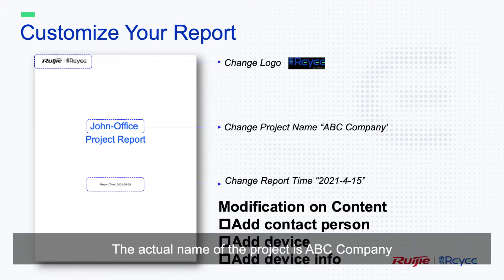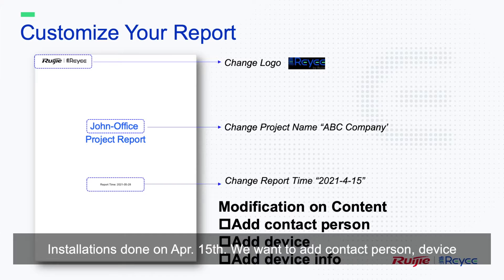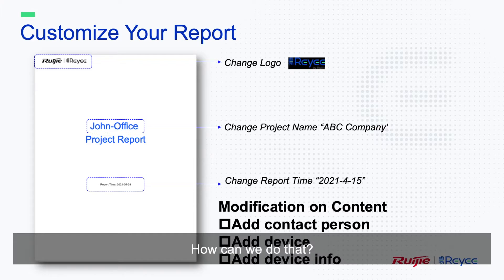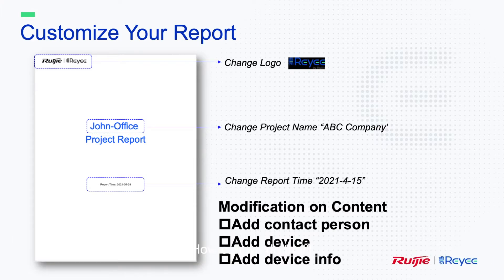The actual name of the project is ABC Company, and installation is done on April 15th. We want to add a contact person, device, and detailed information to that auto report. Also, we want to change the cover logo.